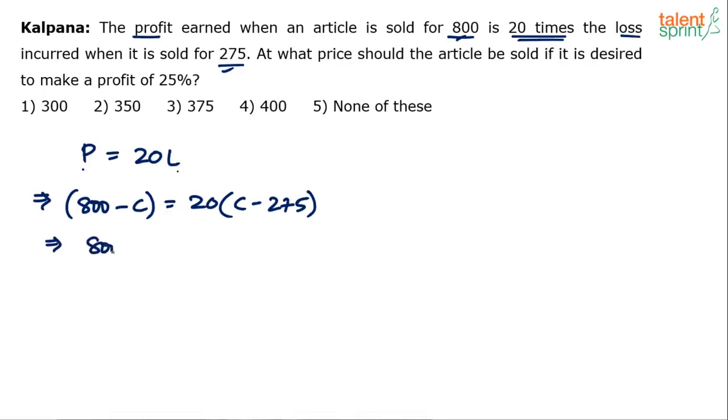800 minus C equals to 20C minus 20 into 275, which is 5500. So we get 21C—20C plus 1C—21C equals 6300, which means C is equal to 300.